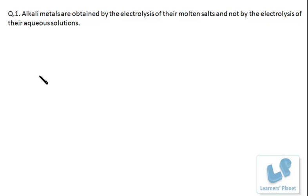Hello friends. Welcome to Learner's Planet. In this session, I am going to discuss about this question: alkali metals are obtained by the electrolysis of their molten salts and not by the electrolysis of their aqueous solution. This you must be knowing, but what is the reason?